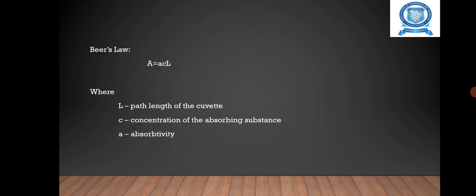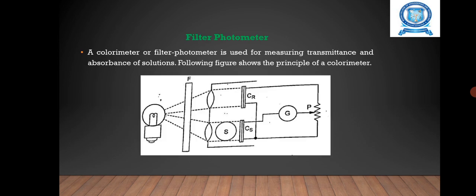Here we have Beer's law. The amount of light absorbed by a colored solution is directly proportional to the concentration of substances in the colored solution: A = ACL. L represents path length of the cavity, C represents concentration of the absorbing substance, A represents absorptivity.